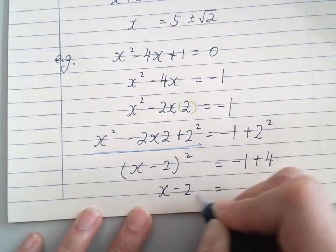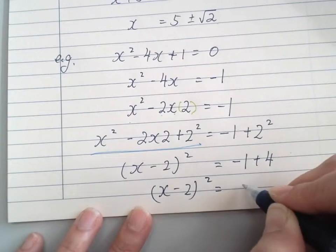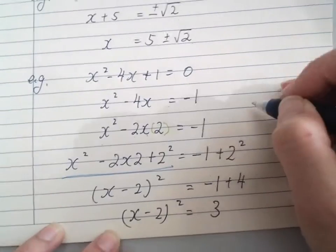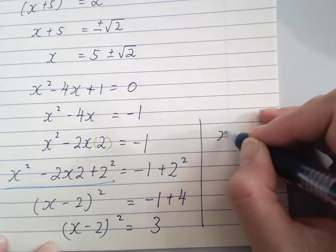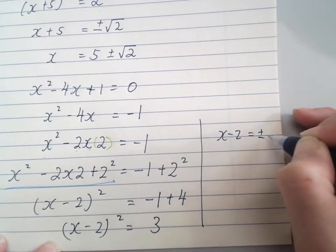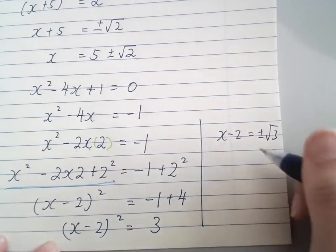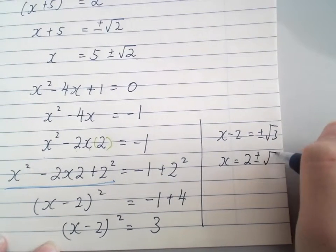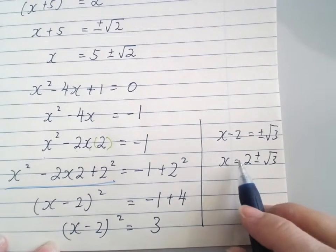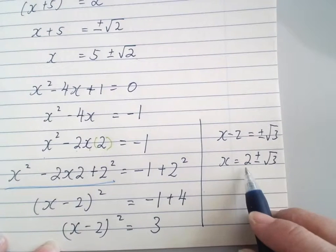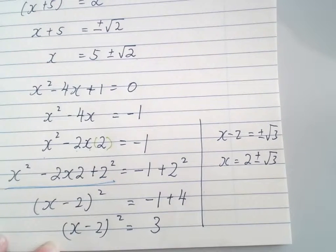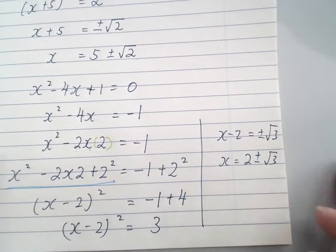So (x-2)² = 3. x-2 equals ±√3, and x equals 2±√3. There are two answers: 2+√3 and 2-√3. Alright, let's try another one.